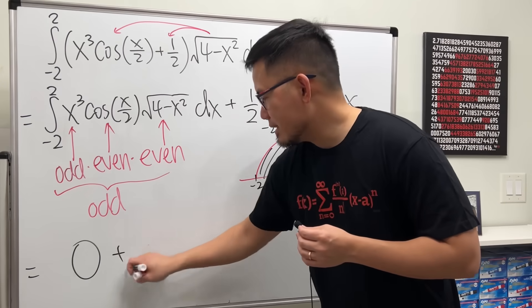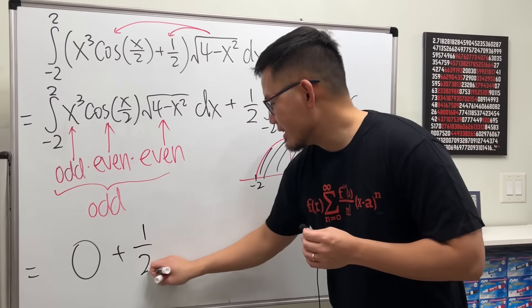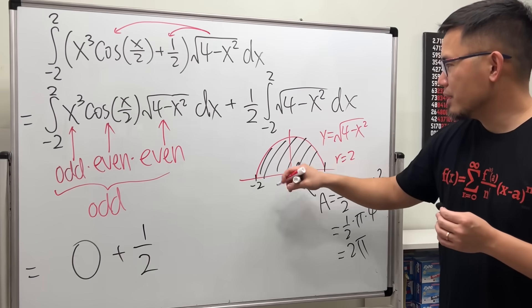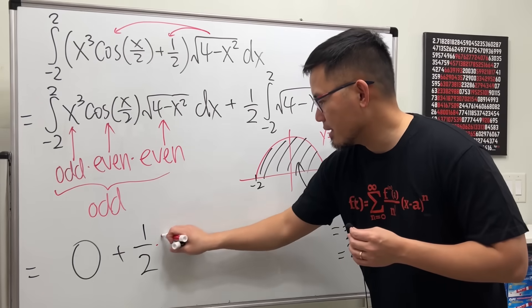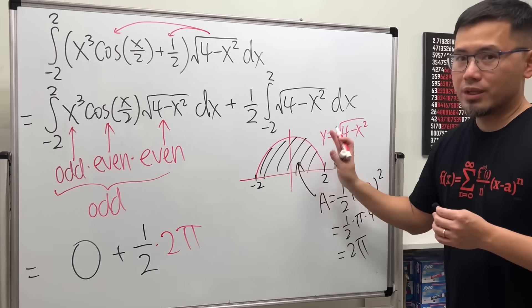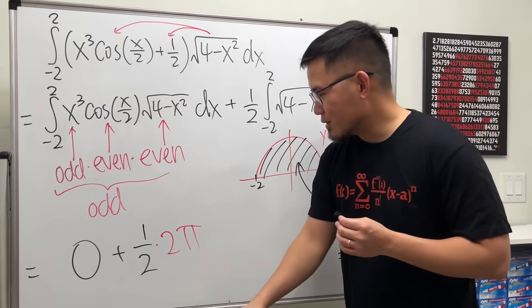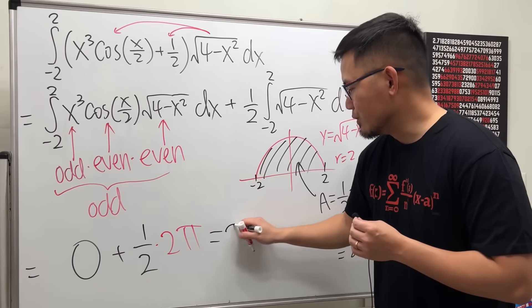Right here we add one half times this integral here, which is 2 pi. That's the part that we got right here. 2 is cancelled, so of course finally we just get the answer pi. Such a famous number.